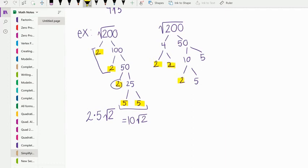We end up with all prime numbers. Then again, we have a pair of 2s, a pair of 5s, and a lonely 2. So we get 10 root 2.